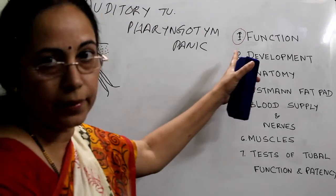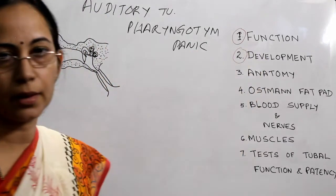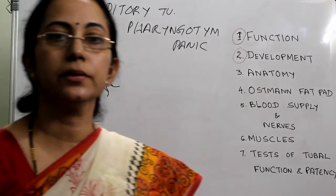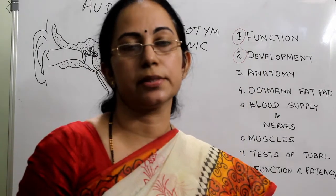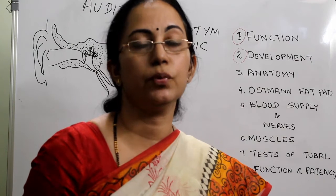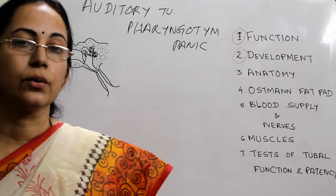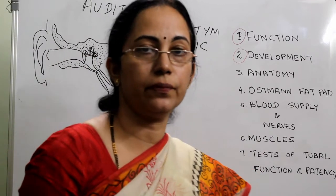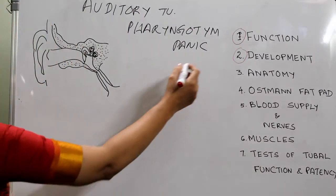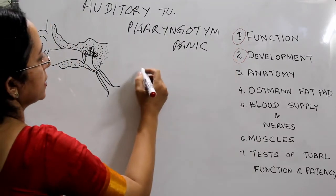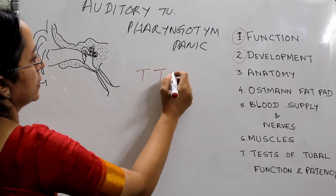The development of the Eustachian tube is from the tubotympanic recess. For more detail, refer to the earlier classes on development of ear, nose and throat.